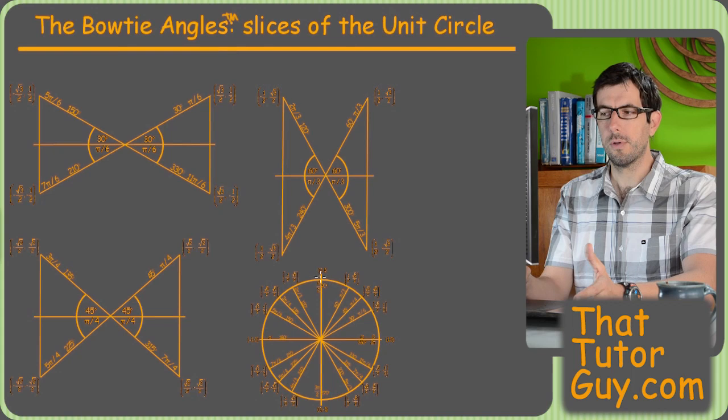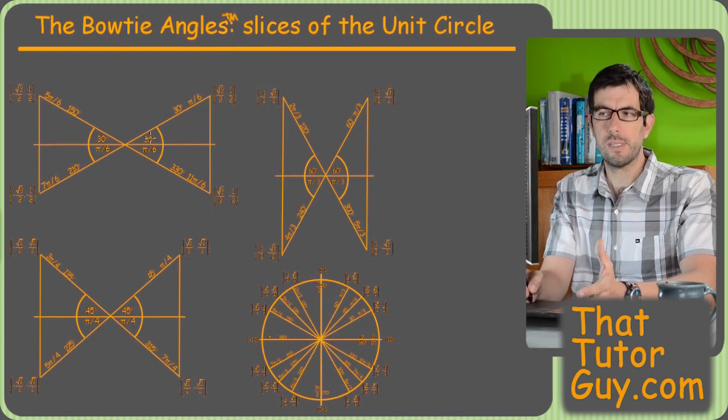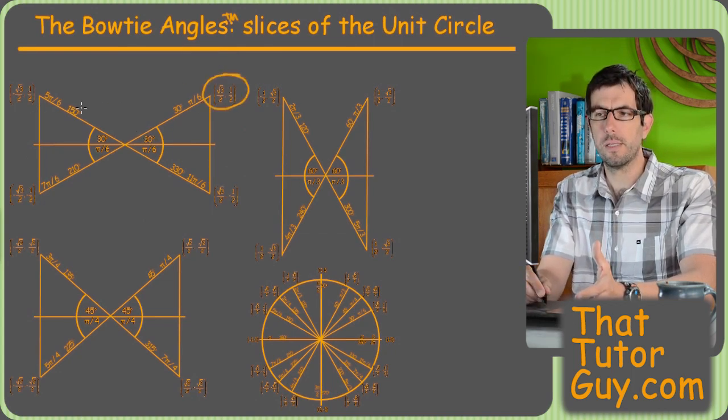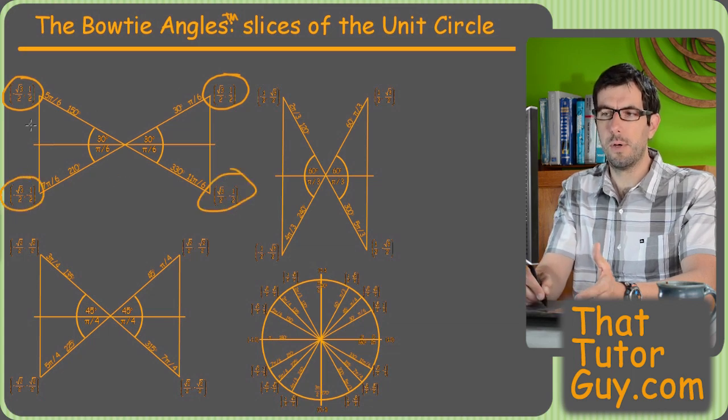so for example, if you look at 30 degrees, there are four angles in the upper left here, there are four angles that have a 30 degree reference angle, and they all have really similar coordinates. So if you realize that those four angles form this kind of bowtie shape,